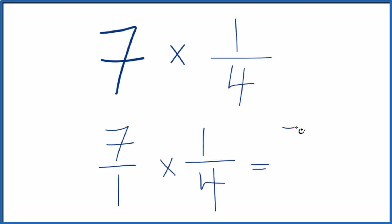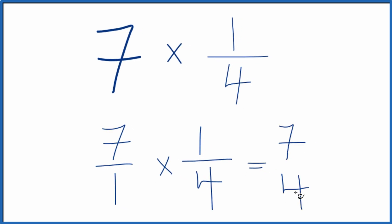So 7 times 1 is 7. 1 times 4 is 4. So 7 times 1 fourth, that gives us 7 fourths.